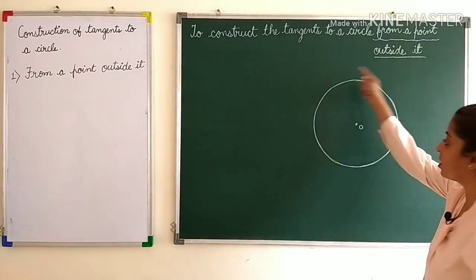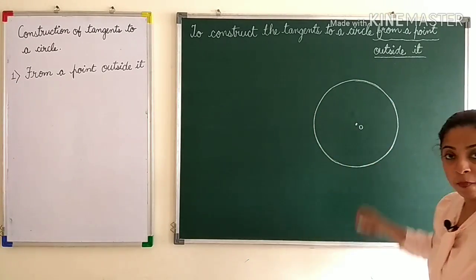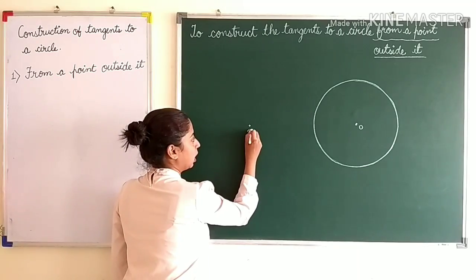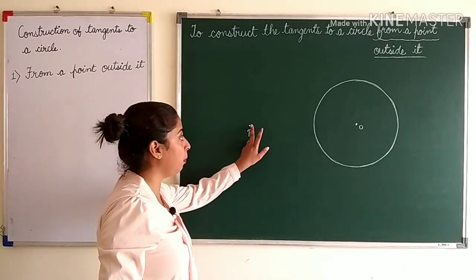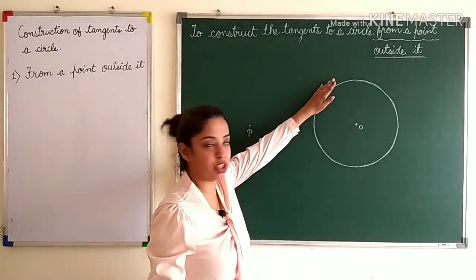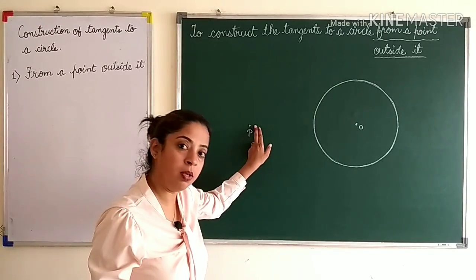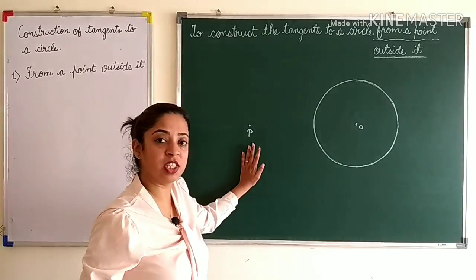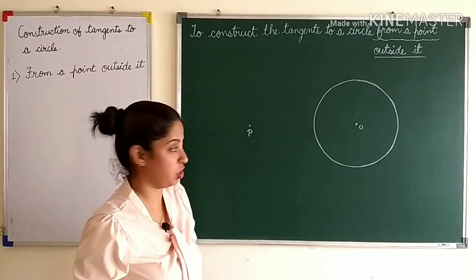Suppose there's a circle with center O and there's a point P outside the circle. From this point P, we have to draw tangent to it. So from one single point outside the circle, how many tangents can we draw? We can draw two tangents.